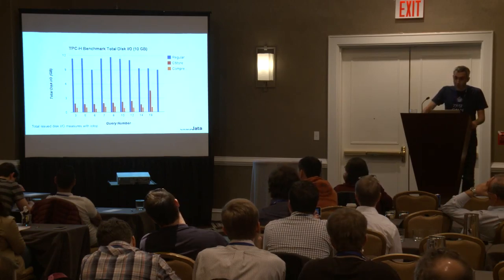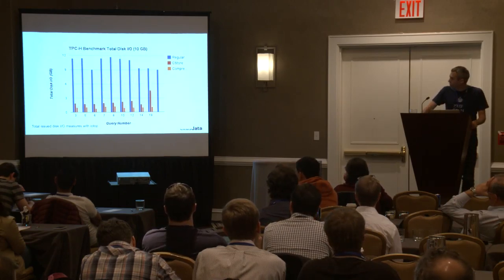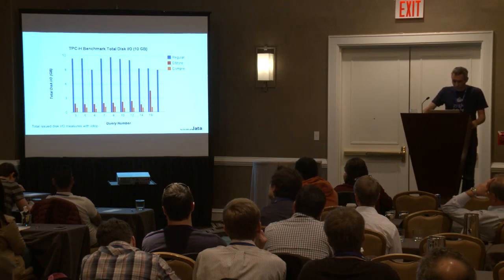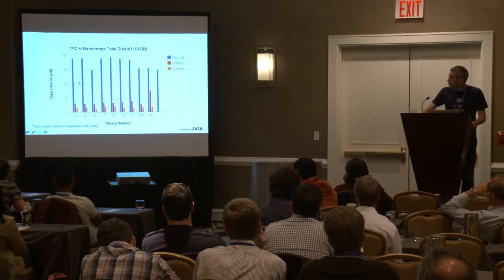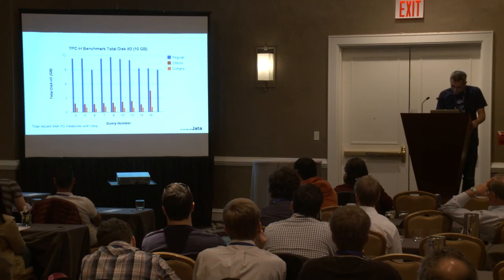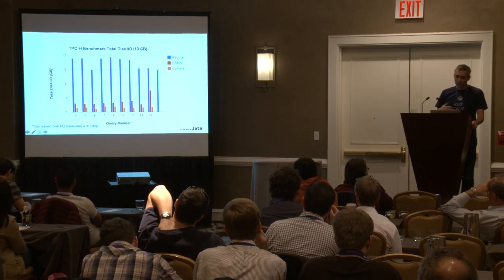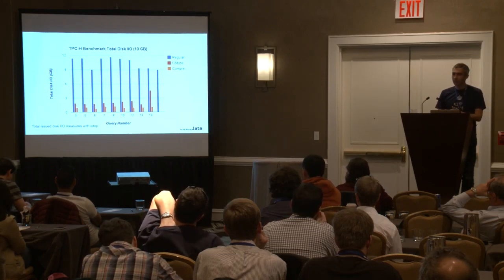To put the disk IO saved into context, we ran IO top on all queries. Query 6, for example, issues 9 GB of sequential disk IO with vanilla Postgres. With c-store compressed, there is more than a 10x improvement — from 9 GB down to 0.8 GB. There is an immediate and dramatic reduction in disk IO issued with c-store compressed.